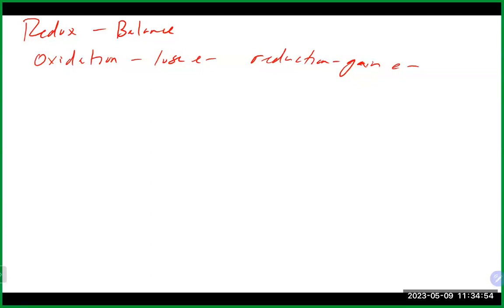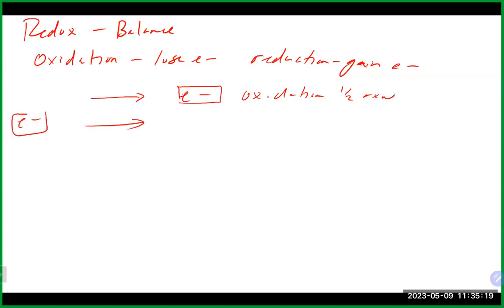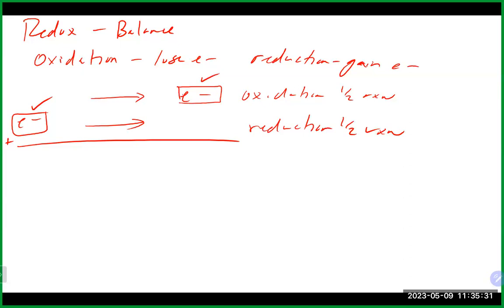For basic redox reactions in neutral solutions, you need to make sure you have the same number of electrons on each side of the half reaction. The electron should always be on the product side for the oxidation half reaction, and on the reactant side for the reduction half reaction. Before adding reactions together, the electrons on both sides must be the same number — you may have to multiply one or both half reactions by a common number.